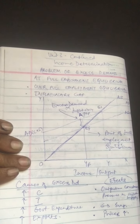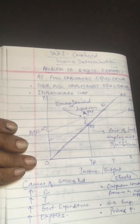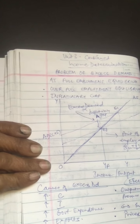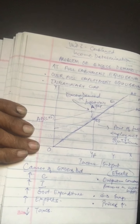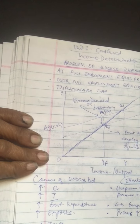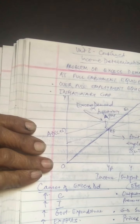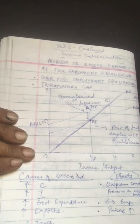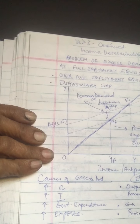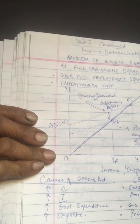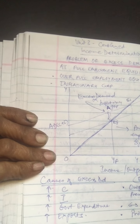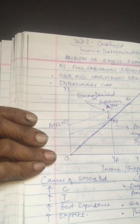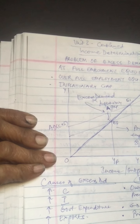What are the causes of excess demand? The first two important ones involve C plus I. There is an increase in consumption expenditure due to an increase in propensity to consume and less propensity to save. Additionally, there is an increase in investment due to high business expectations. These two causes are responsible for excess demand in a two-sector economy.